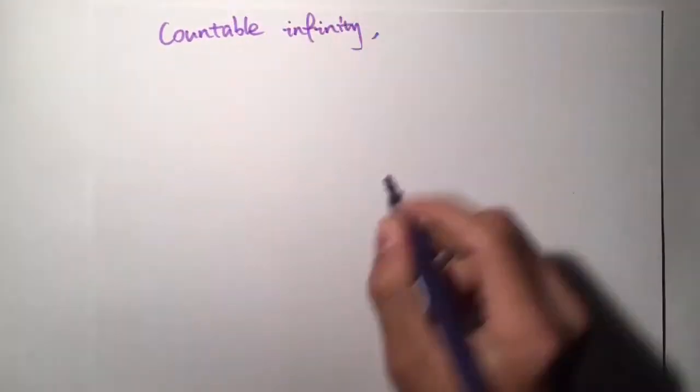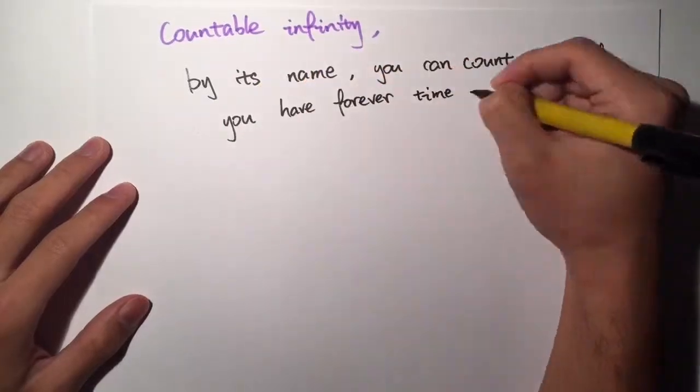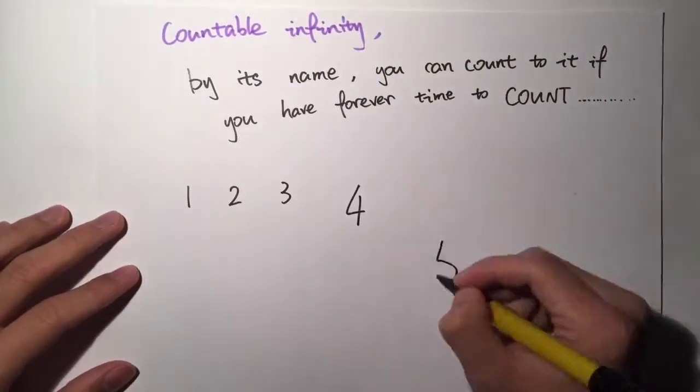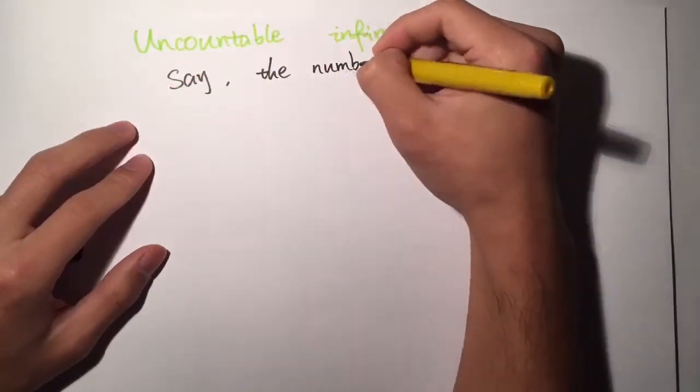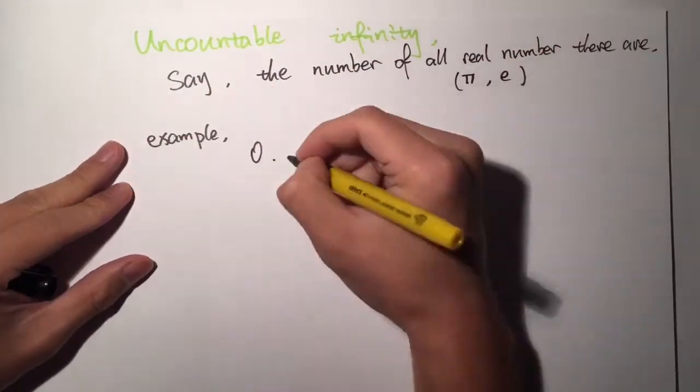There are two types of infinity: countable infinity, which by its name you can count if you have forever to count—1, 2, 3, 4, 5, 6, 7—and uncountable infinity, which is the number of real numbers.